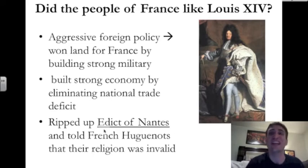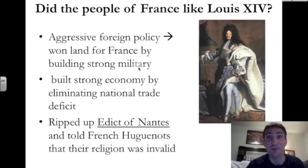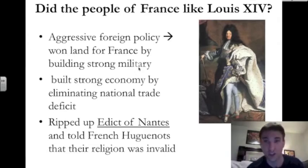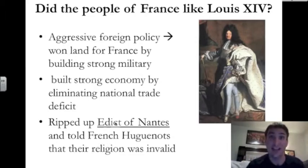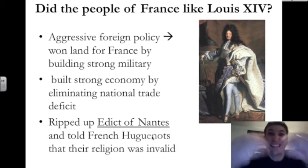Did the people of France like Louis XIV? Well, it depends on who you were in France. He was aggressive when it came to foreign policy. He won a lot of land for France by building France a strong military. He also built a strong economy by eliminating the national trade deficit and providing jobs for the French people. However, he favored Catholics over other kinds of Christians. Louis XIV ripped up the Edict of Nantes that was decided on during the Protestant Reformation and told the French Huguenots — who were Protestants practicing their religion in France — that their religion was invalid. Religious tolerance was no more.